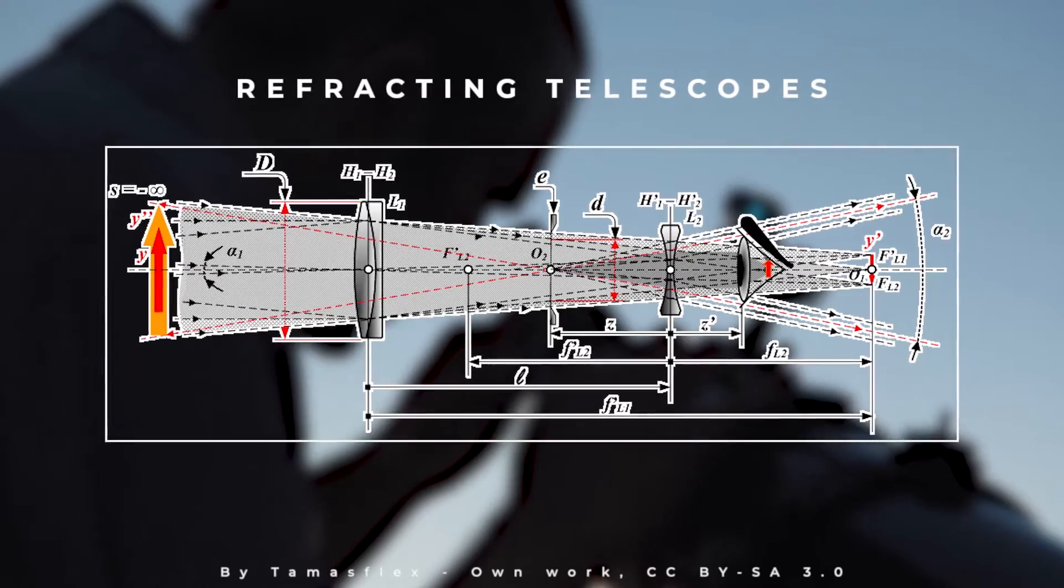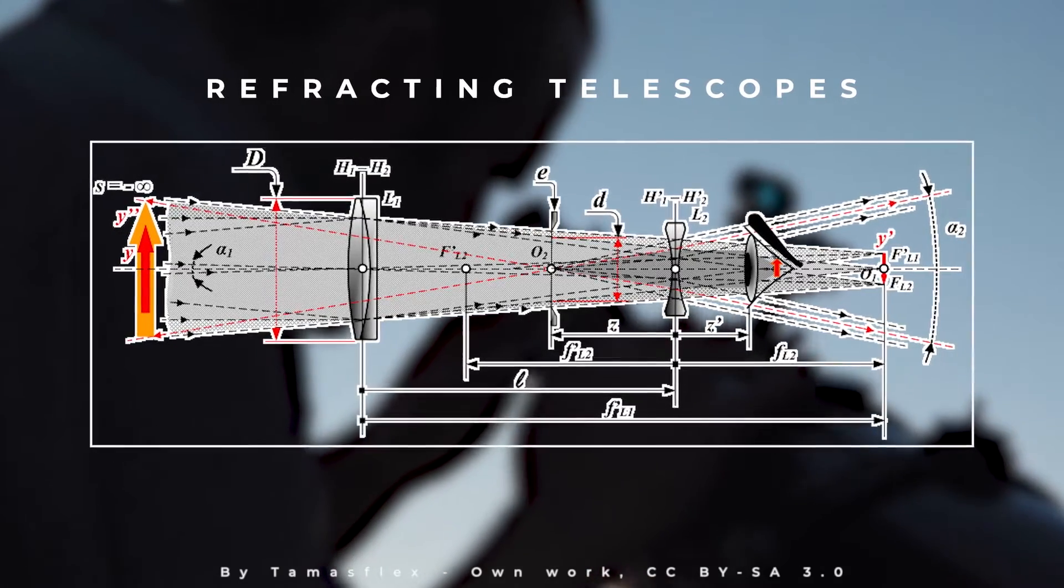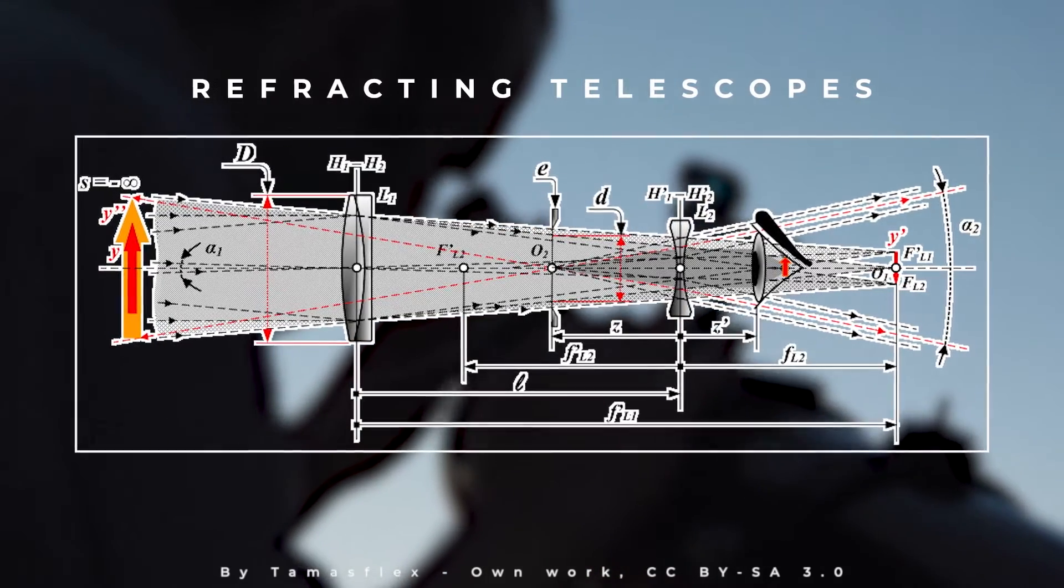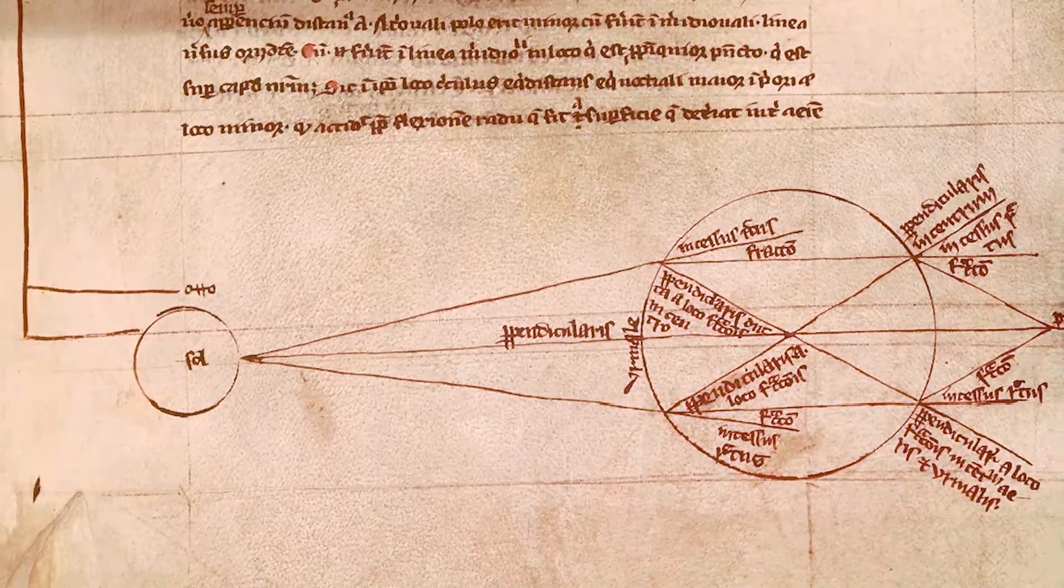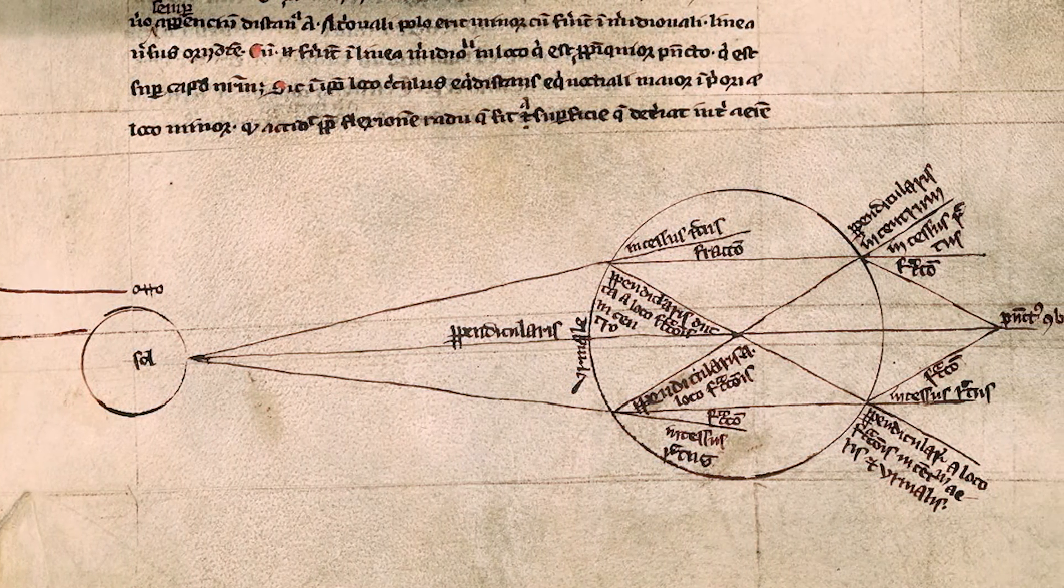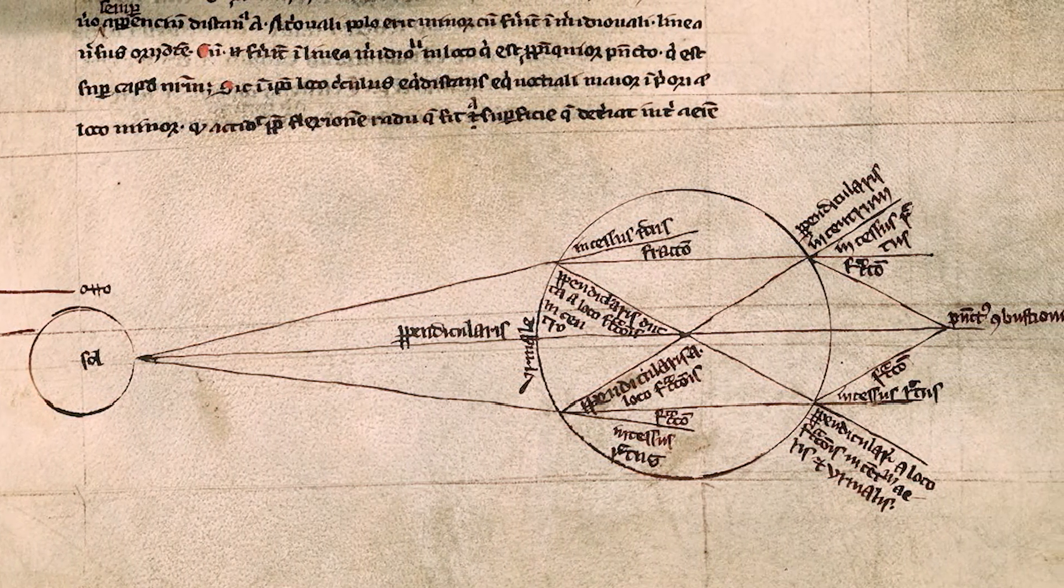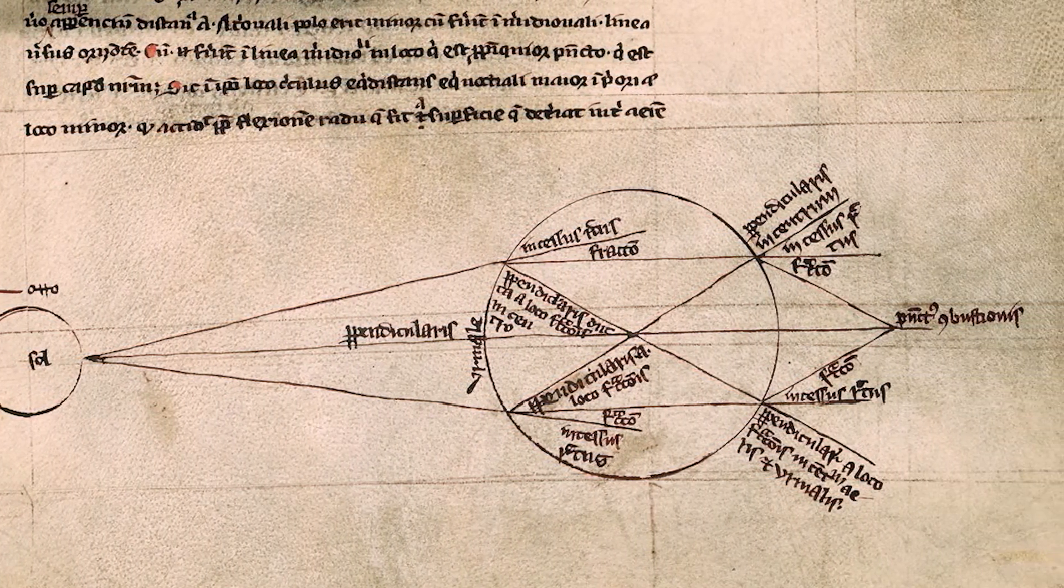Refracting telescopes are the most common type of telescope used today and have been around since the time of Galileo. The first telescope was a refracting telescope and its design has been refined and perfected over the centuries.